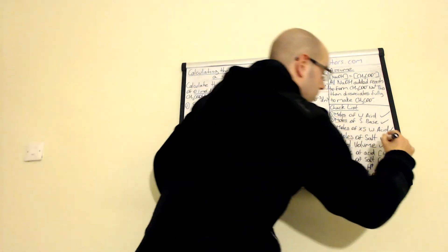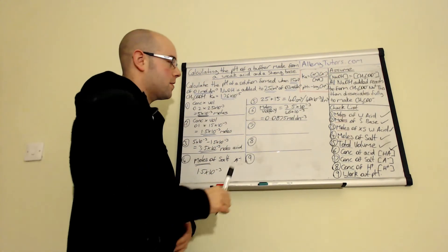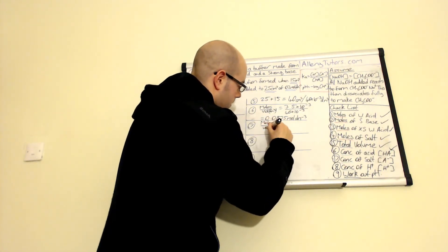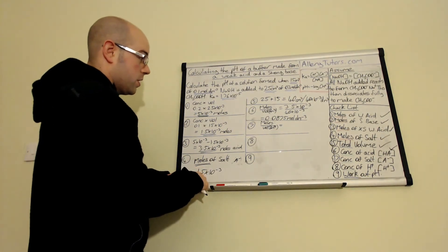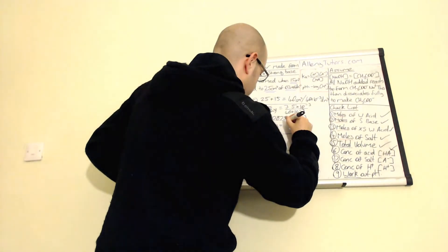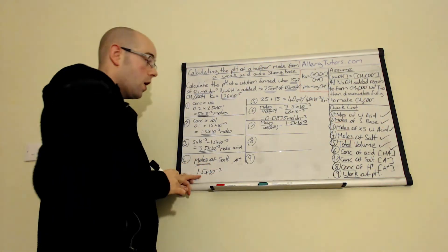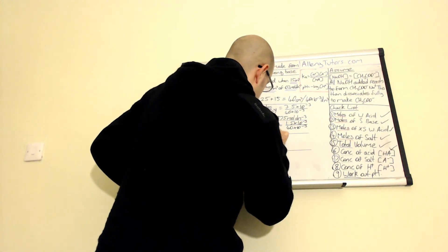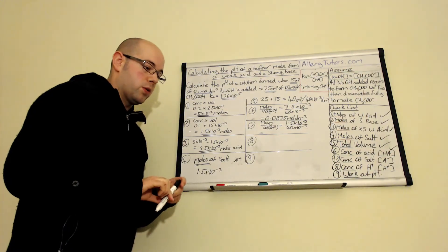Next we work out the concentration of our salt — the A⁻ part of the Ka expression. We do the same calculation: moles ÷ volume. The moles of salt from step 4 is 1.5 × 10⁻³, divided by the total volume of 40 × 10⁻³ dm³. That gives a concentration of salt of 0.0375 mol dm⁻³.